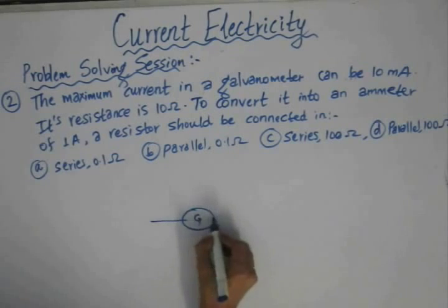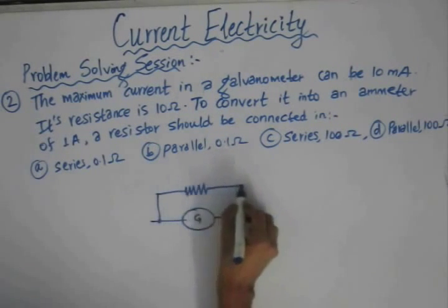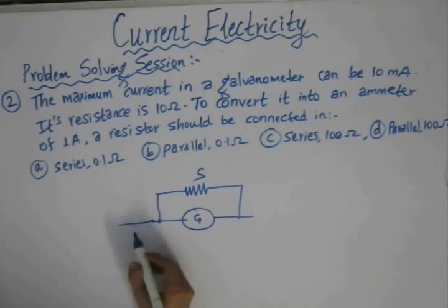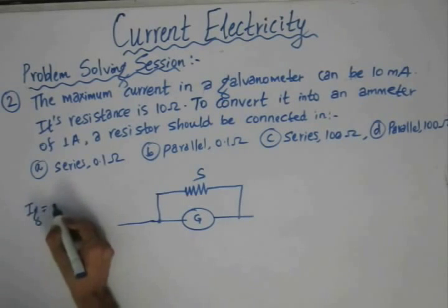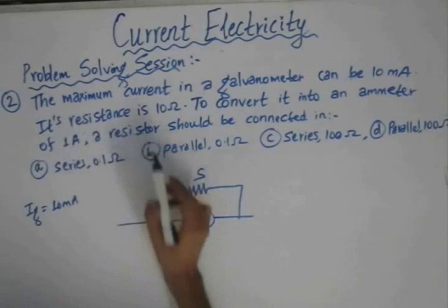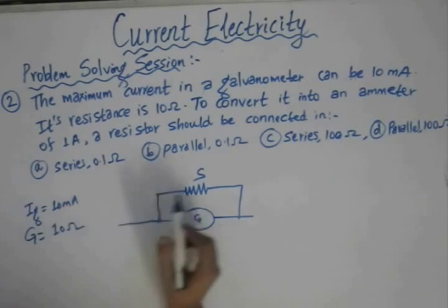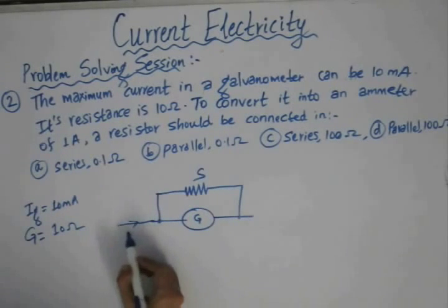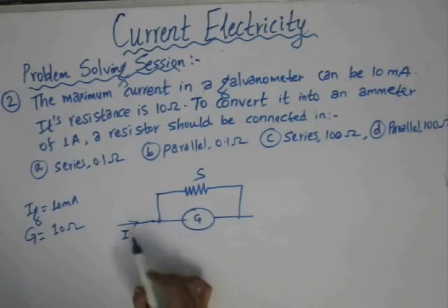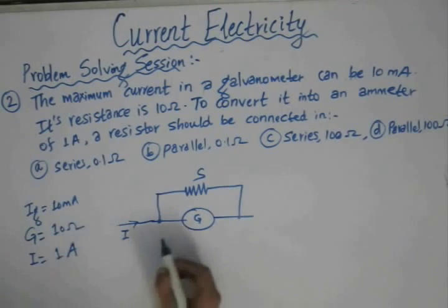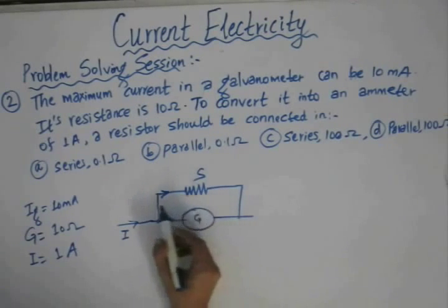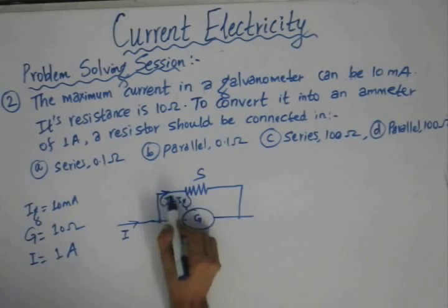The circuit consists of a galvanometer and a shunt resistor of low value connected in parallel. The full-scale deflection current IG is 10 milliampere, and the galvanometer resistance G is 10 Ohm. Our aim is to extend the range from 10 milliampere to 1 Ampere. The current through the galvanometer is IG, and the current through the shunt resistor is I minus IG, by applying KCL at the node.